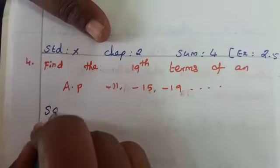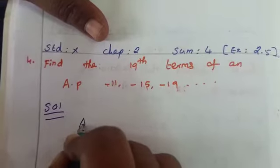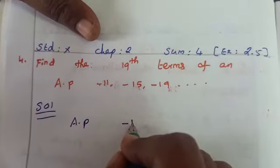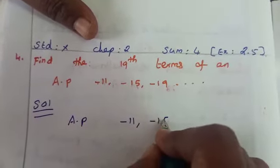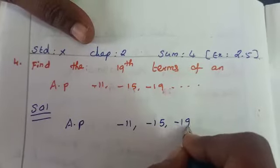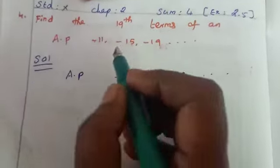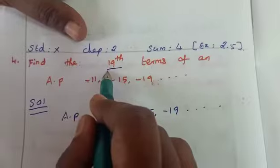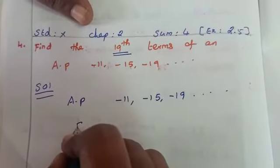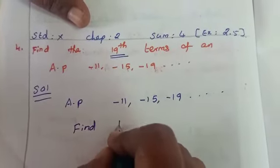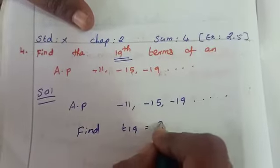Now, take and write the AP. AP is -11, -15, -19 and so on. What we want to find? Find the 19th term, that is, find T19 equal to how much?